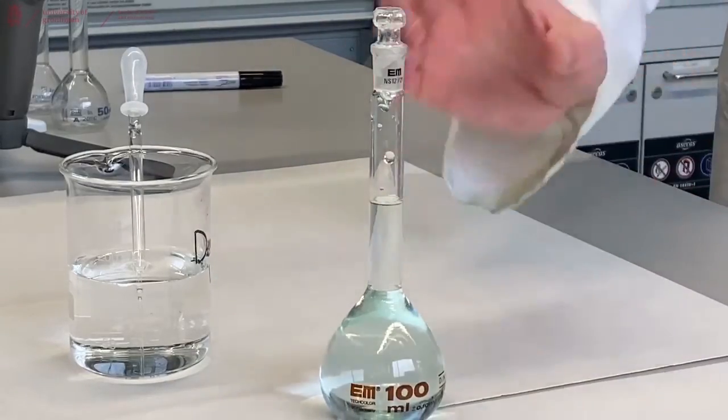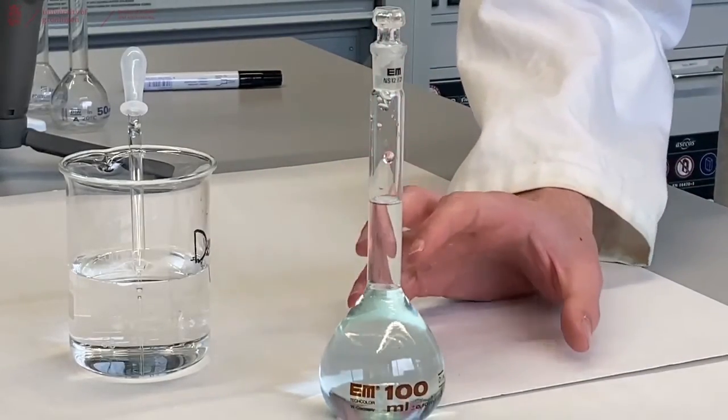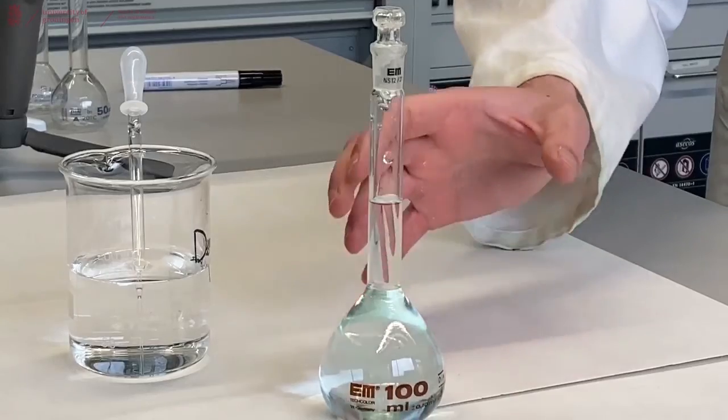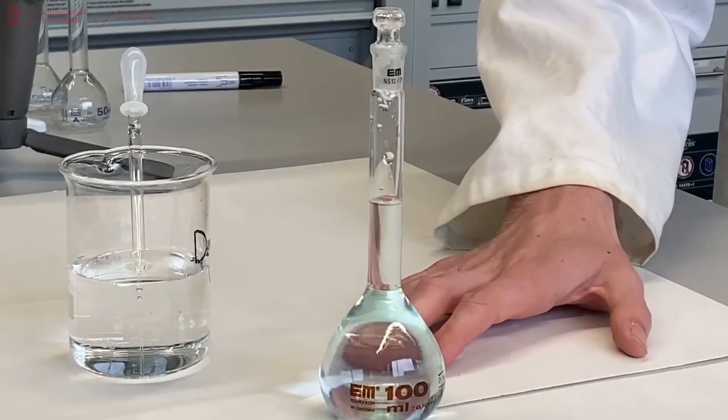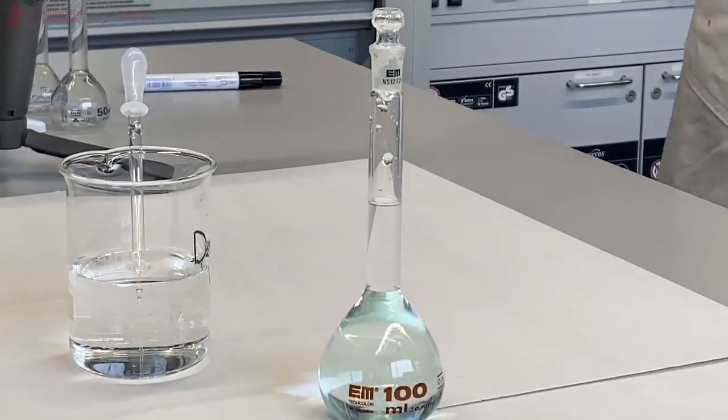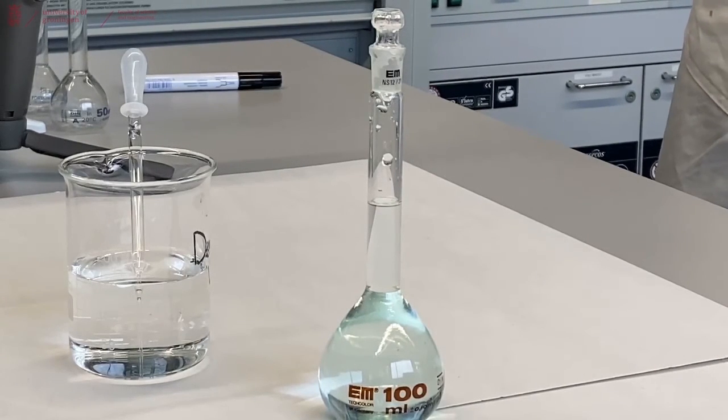So we know that the total liquid in this flask is now the correct concentration that we wanted to have, or of the known concentration that we can now calculate. And that's how you use a volumetric flask.